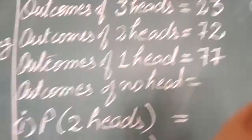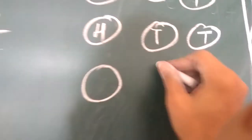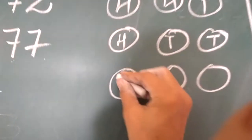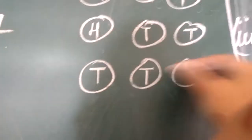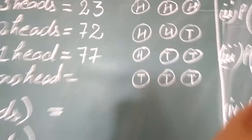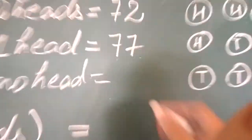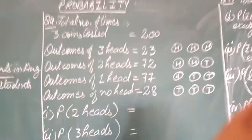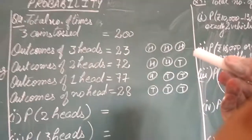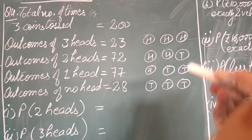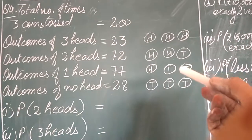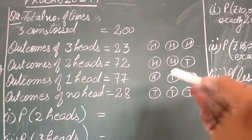Outcomes of no head: on the 3 coins, no head is there, meaning all 3 coins are facing tail — that is 28 times. So dear students, along with the heads, we are also getting information about the tails. Just look here — along with the head information, we are getting the tail information.